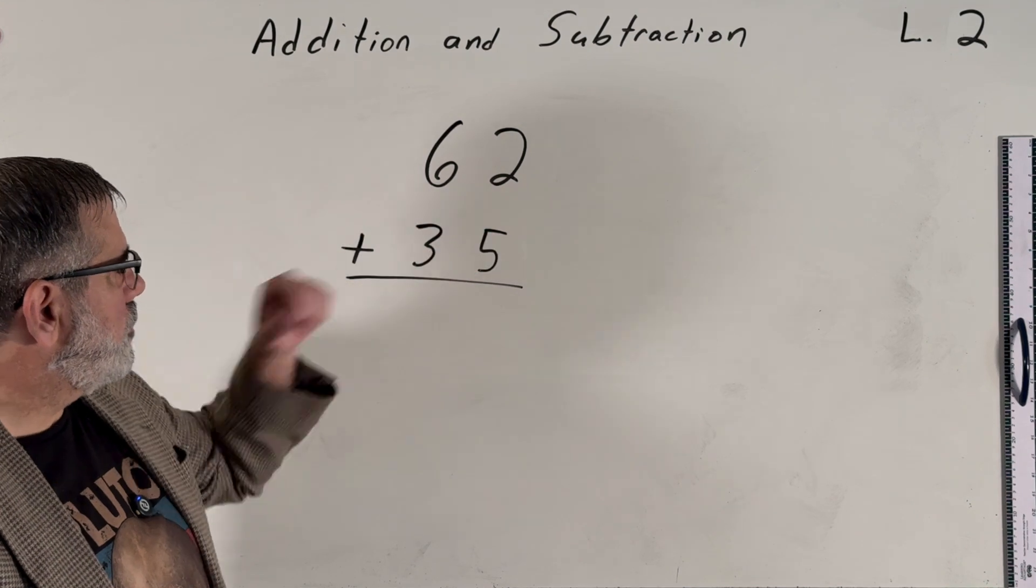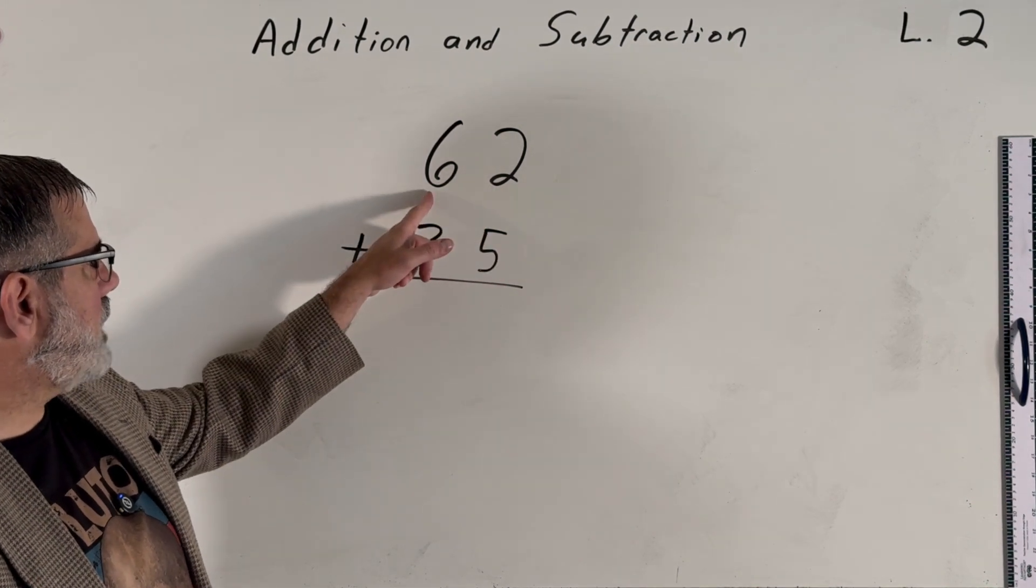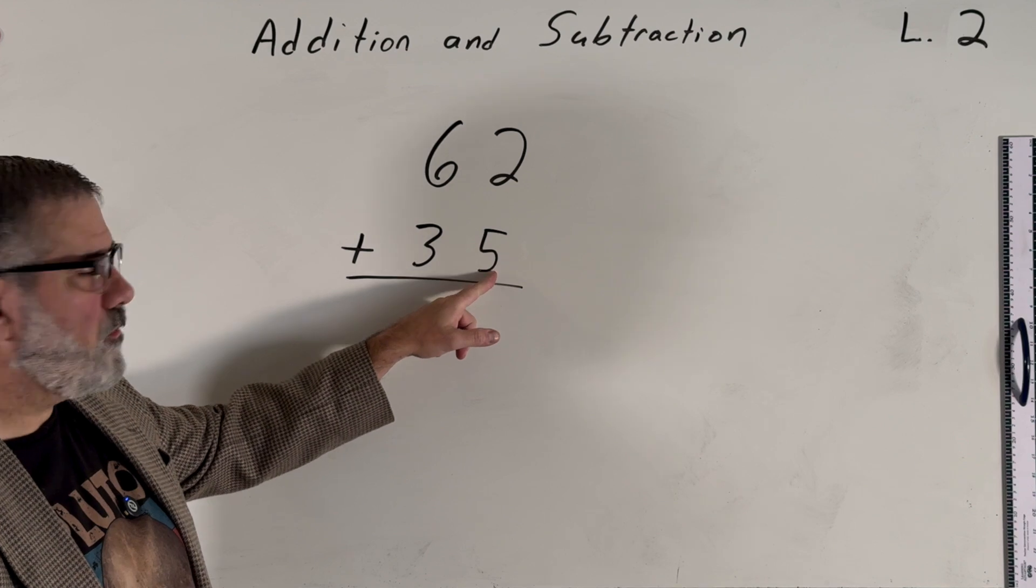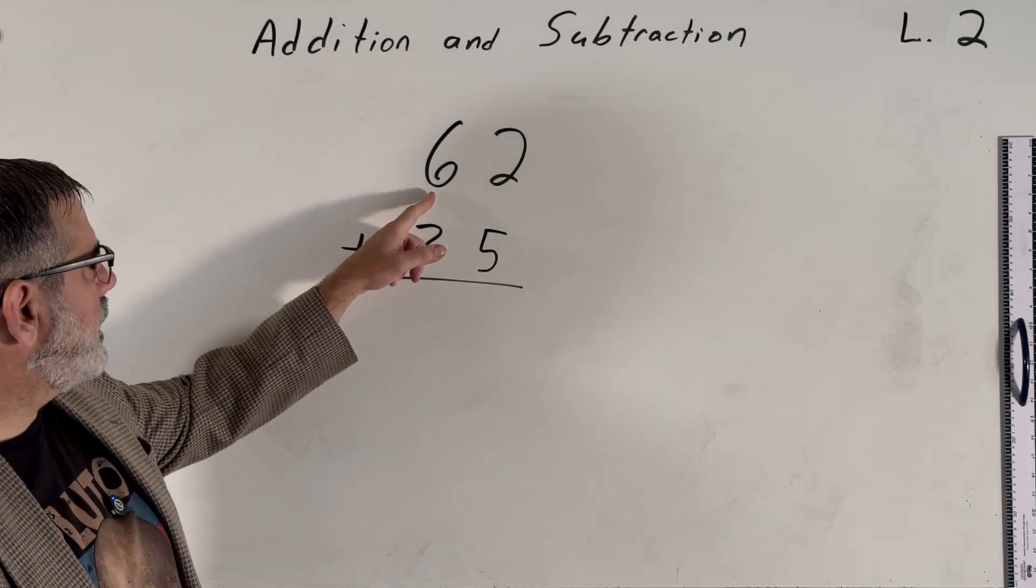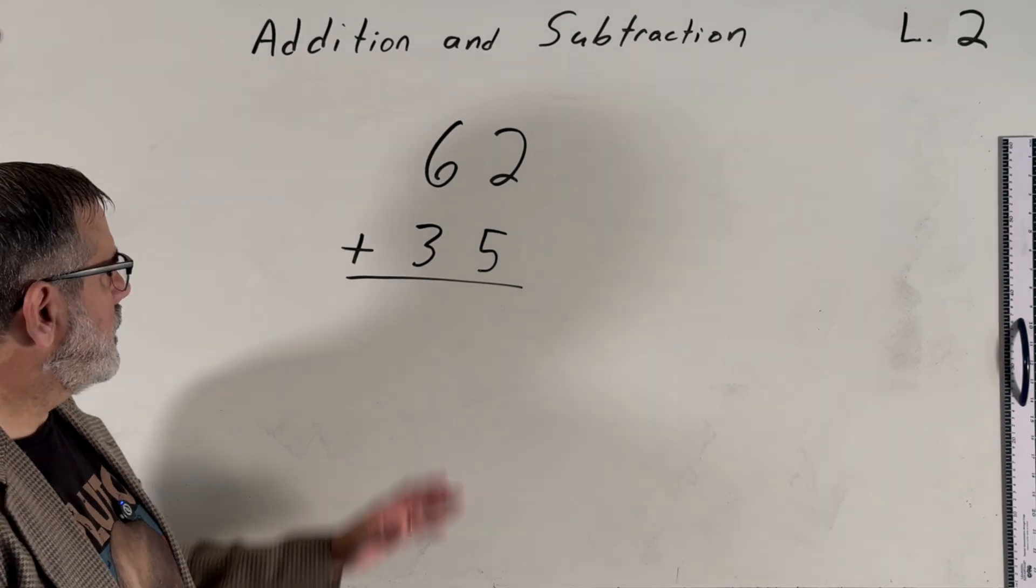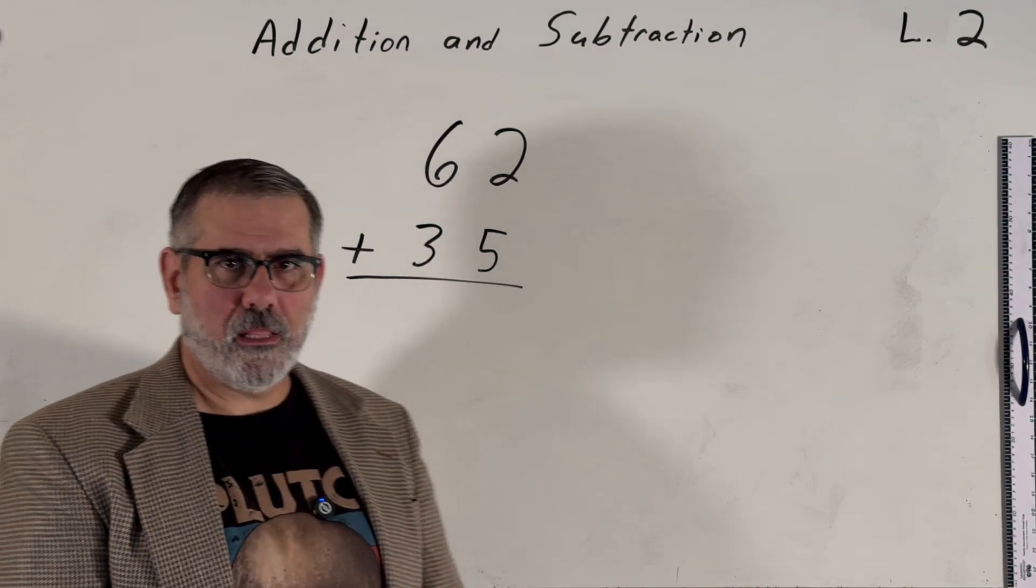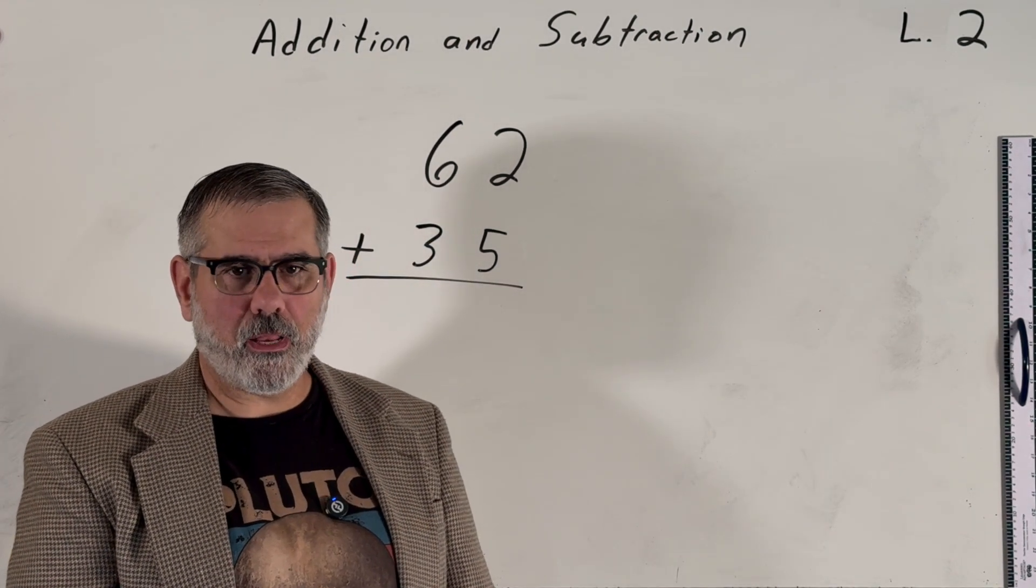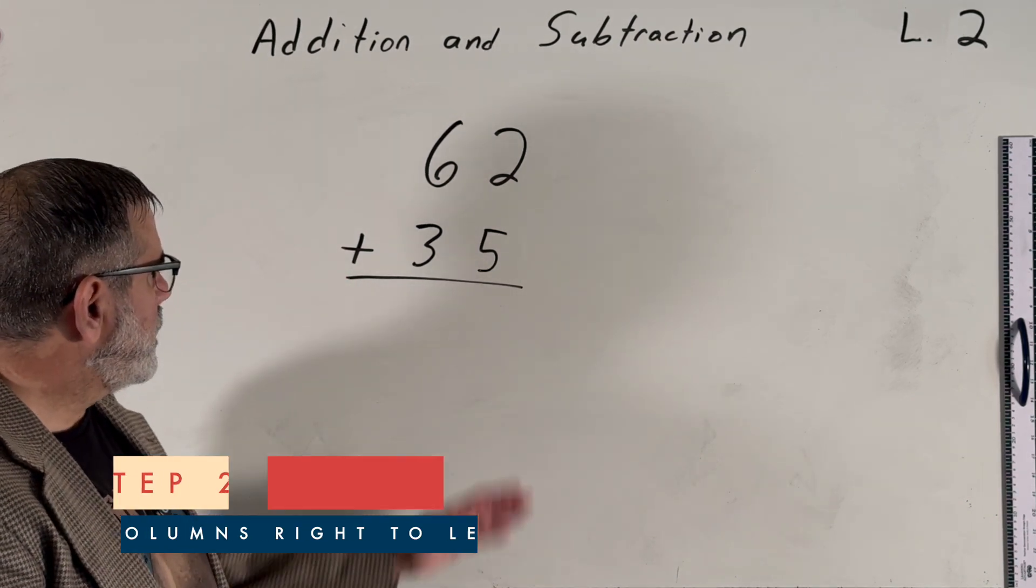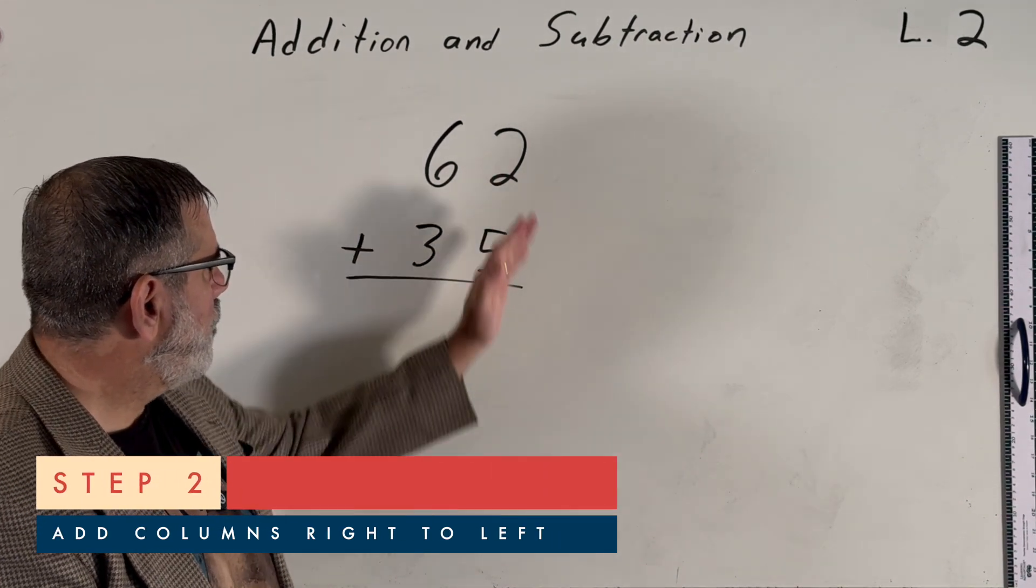So notice that 62, which has two 1s and six 10s, we line up the two 1s from 62 with the five 1s from 35, and we also line up the six 10s from 62 with the three 10s from 35. That's important. Writing your problems out neatly will greatly aid in getting the right answer and make this pretty straightforward. After that, all we do is column by column, we add these things up.